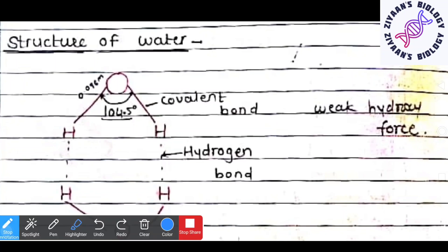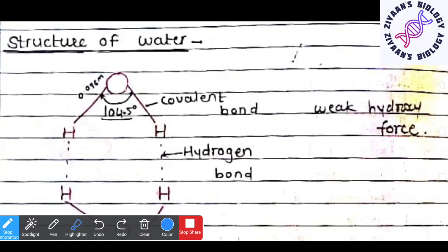Now dealing with the structure of water. This is the proper structure of one single water molecule — here we have the oxygen, and these two are the hydrogen atoms. The bond present between hydrogen and oxygen is called a covalent bond, whereas the bond present between the hydrogen atoms of two different molecules is called a hydrogen bond.